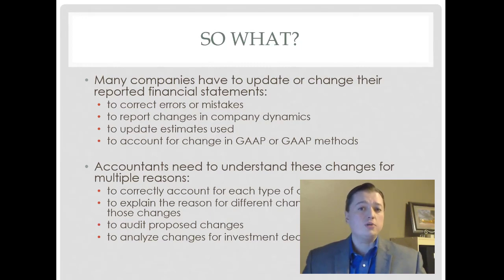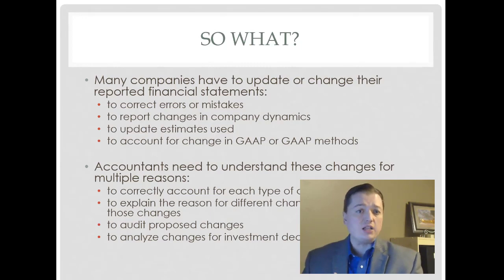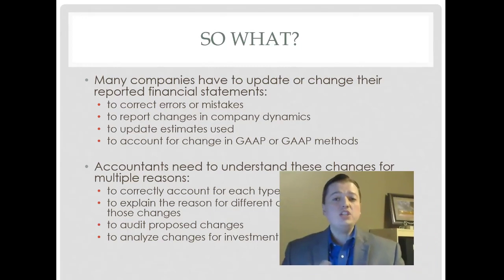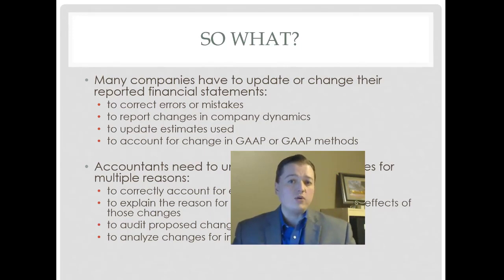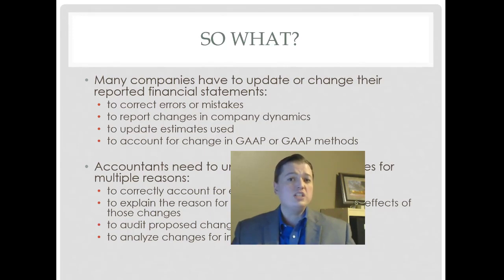In addition, we choose principles or methods required by GAAP that may or may not be accurate. For example, do our inventory items follow LIFO, FIFO, or weighted average? We can change those principles just like estimates as we get better information. It could also be that FASB has said you can't use that method anymore — leases, revenues, lower cost or market adjustments have all recently been changed by FASB and companies have had to change their methods to reflect the new rules.